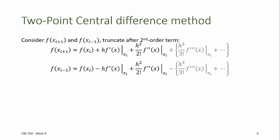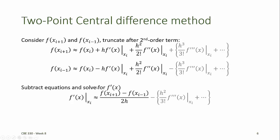To derive the two-point central difference formula, we begin by considering two Taylor series expansions, both around the point xi — one predicting f at xi plus 1, the other predicting f at xi minus 1. This time, instead of truncating after the first-order terms, we truncate after the second-order terms. Notice that we have two second-derivative terms that are identical. We can subtract these two equations to eliminate the second-derivative terms. When we subtract them, we obtain a difference between f at xi plus 1 and f at xi minus 1. The subtraction also eliminates the f at xi terms and results in doubling the h f prime at xi term. So we divide by 2h to derive a formula for f prime at xi, which relates f prime at xi only to f at xi plus 1 and f at xi minus 1.